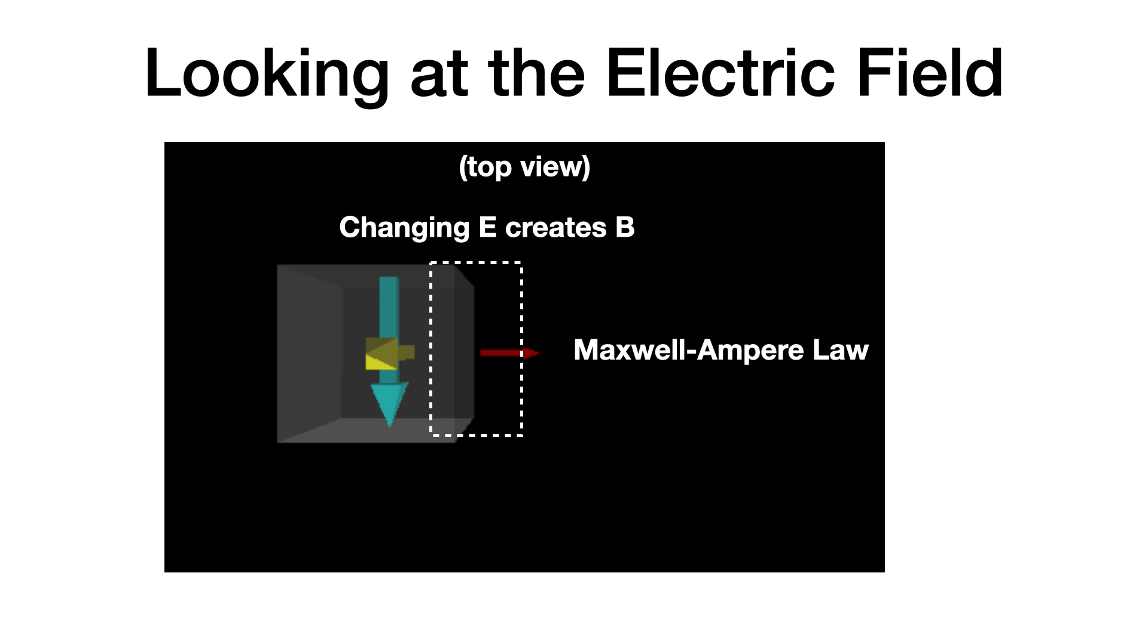If I use the Ampere-Maxwell law, then that changing electric field in that region changes the flux. That's going to produce a magnetic field. So the changing electric field in this region makes a magnetic field. That's one of those laws.